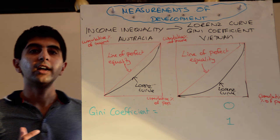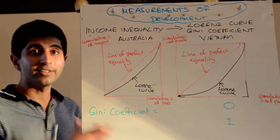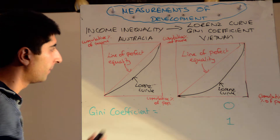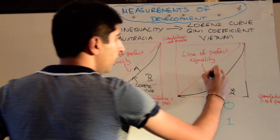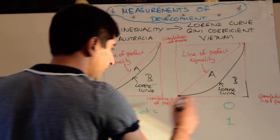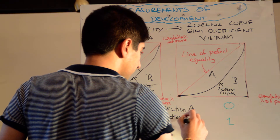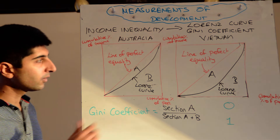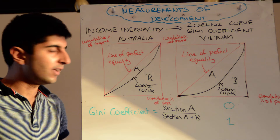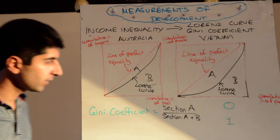Going one stage further, the Gini coefficient can actually give us a measure of how much inequality there is. The Gini coefficient takes what the Lorenz curve is visually saying and provides a number to that. There is a formula. We assign letters to the areas on our Lorenz curve diagrams. The Gini coefficient puts a value on these areas and then calculates a figure based on this equation. It measures the area inside the Lorenz curve but outside the line of perfect equality — that's section A — and then divides that by the total area underneath the line of perfect equality.